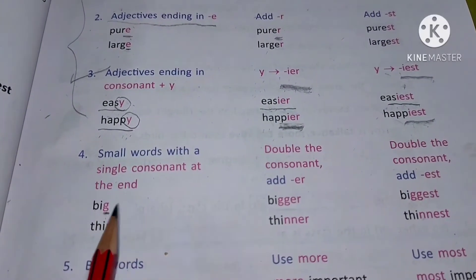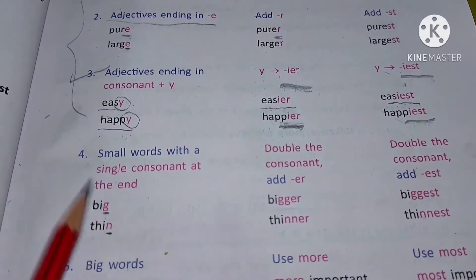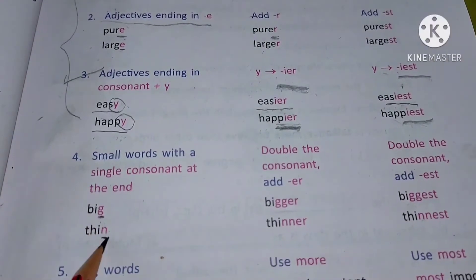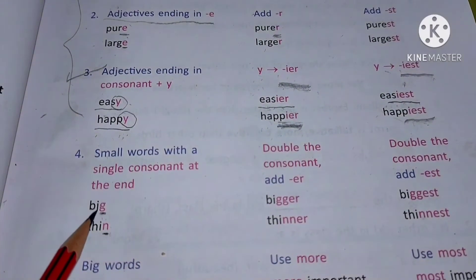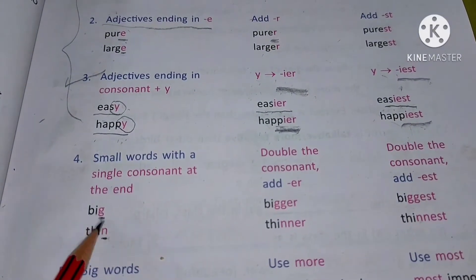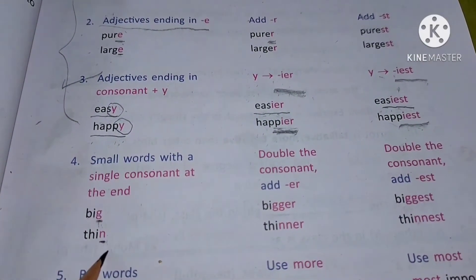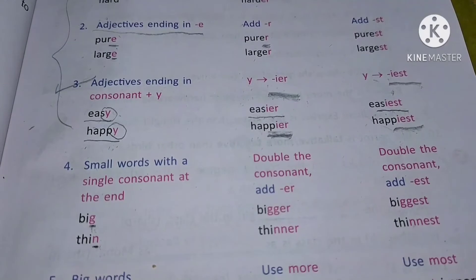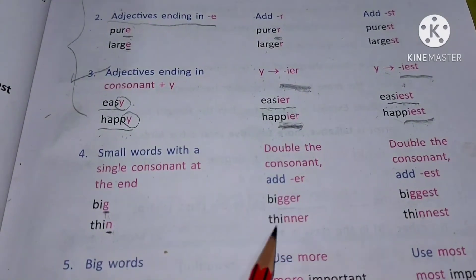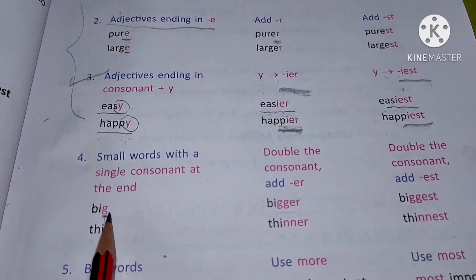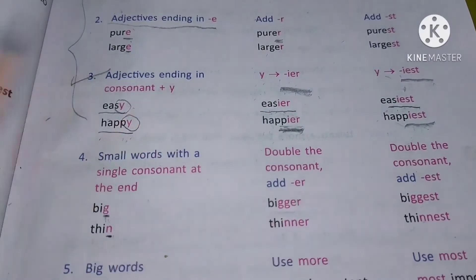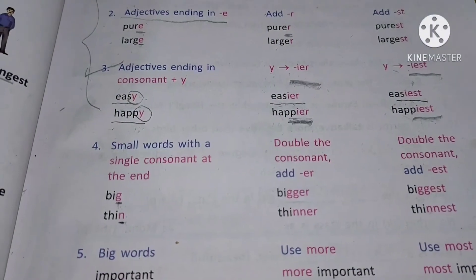Jab aapke aise words, such words that are ending in consonants - big or thin mein ending kya hai? G, g is your consonant, and thin mein aapka n consonant hai. Aise cases mein when we are using comparative degree, us mein kya hoga? Double the consonant. Yahan consonant g hai, g ko double kar, double g, and e-r as it is will be there.